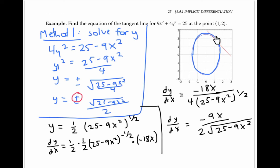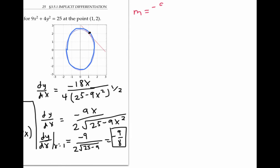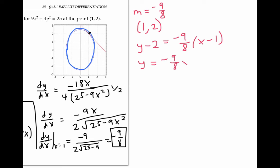This formula only holds for the top half of the ellipse; for the bottom half we would use the negative. Evaluating at the point (1, 2) with x = 1, we get dy/dx = −9 / (2√(25 − 9)) = −9/8. Since we found the slope and know the point (1, 2) lies on the tangent line, we use point-slope form. Simplified, this becomes y = −(9/8)x + 25/8.